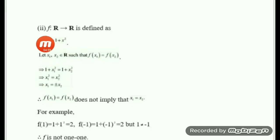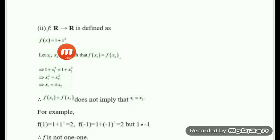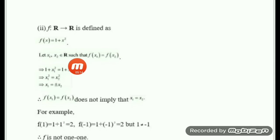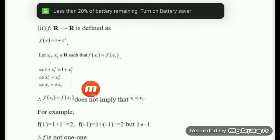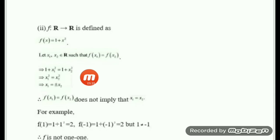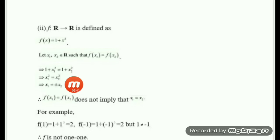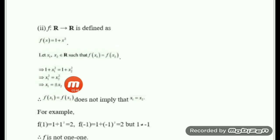The second part of the question is: f from R to R defined by f(x) = 1 plus x squared. Again, we consider two elements x1 and x2 in the domain such that f(x1) = f(x2). Using the definition, 1 plus x1 squared = 1 plus x2 squared. Cancelling 1, we get x1 squared = x2 squared, which gives x1 = plus or minus x2. That means x1 is not necessarily equal to x2, so this is not one-to-one.